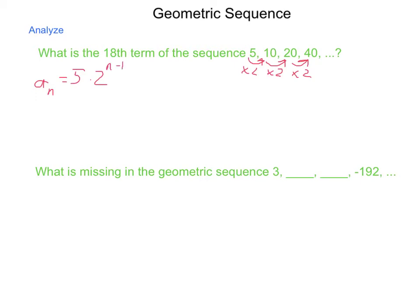We're looking for the eighteenth term, so a sub 18 equals 5 times 2 to the 18 minus 1 power. 18 minus 1 is 17. 2 to the seventeenth times 5 is equal to 655,360. That would be the eighteenth term in the sequence.